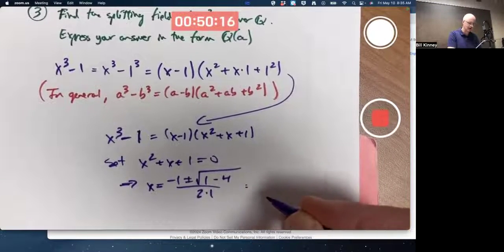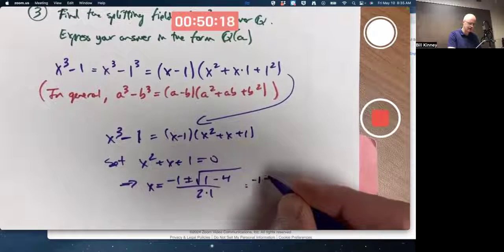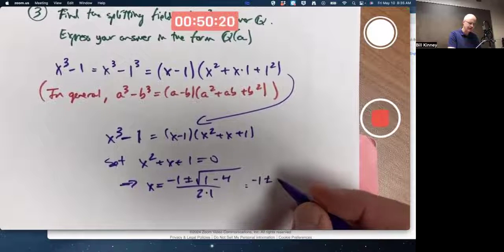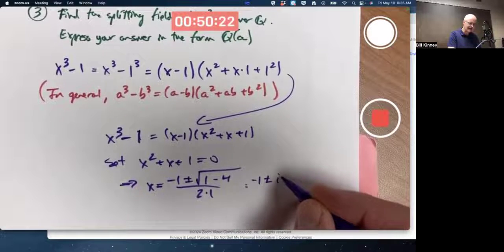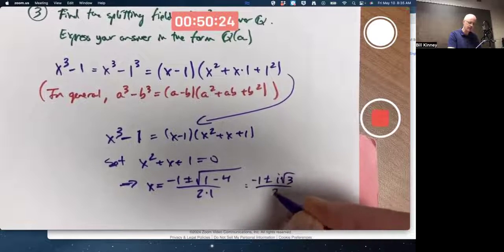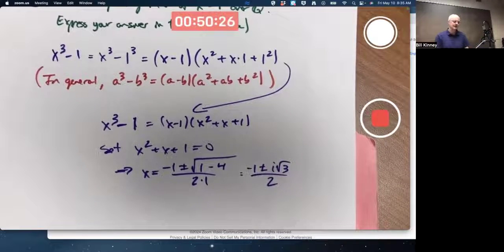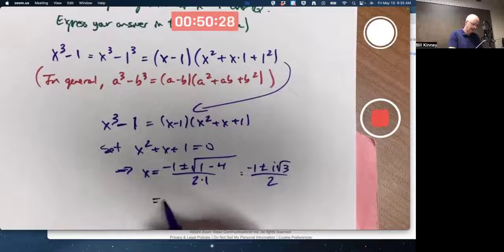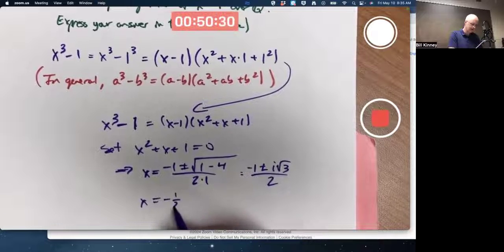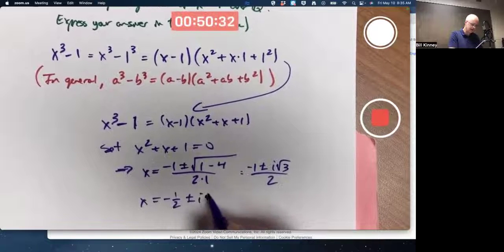The quadratic formula gives roots -1 ± √(1 - 4) over 2·1. Oh, a negative under the square root. That'll be -1 ± √(-3) is i times √3, where i is the imaginary unit. Negative 1/2 ± i√3/2.